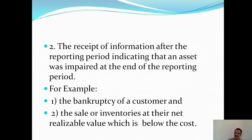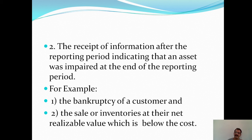Second example: the receipt of information after the reporting period indicating that an asset was impaired at the end of the reporting period. For example, the bankruptcy of a customer — if we have a debtor who goes bankrupt, and we get this information after the reporting period. Another example is the sale of inventories at their net realizable value which is below the cost.